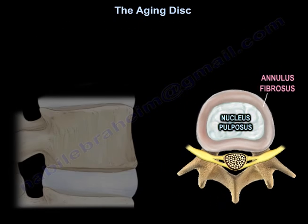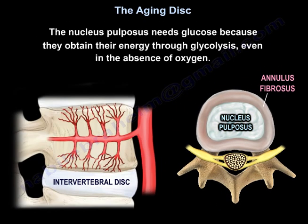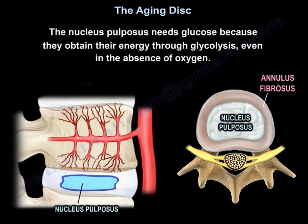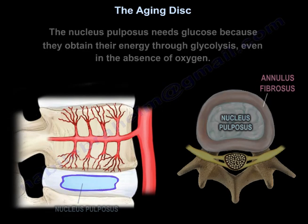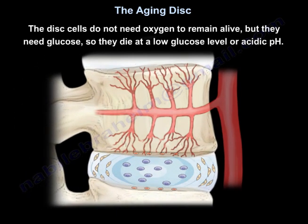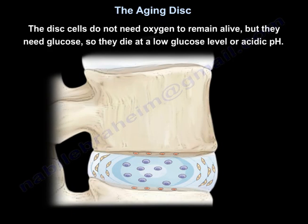The nucleus pulposus needs glucose because the cells obtain energy through glycolysis even in the absence of oxygen. The disc cells do not need oxygen to remain alive, but they do need glucose — they die at low glucose levels or acidic pH.